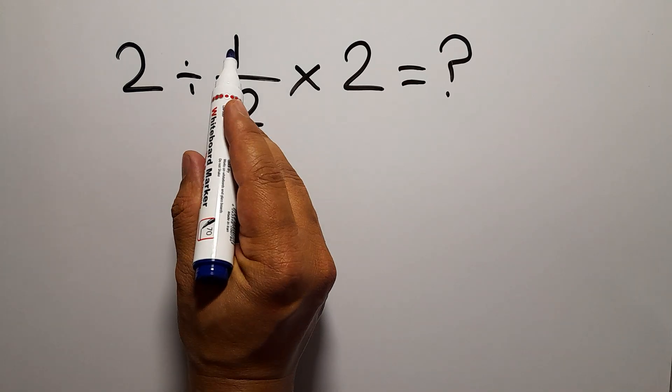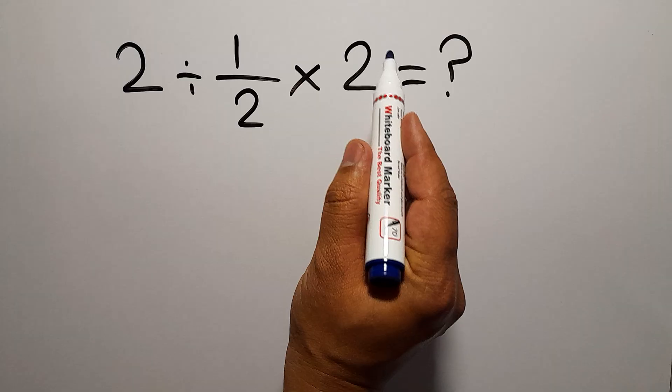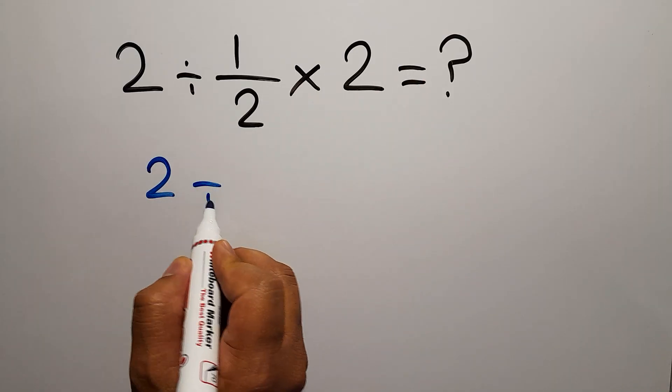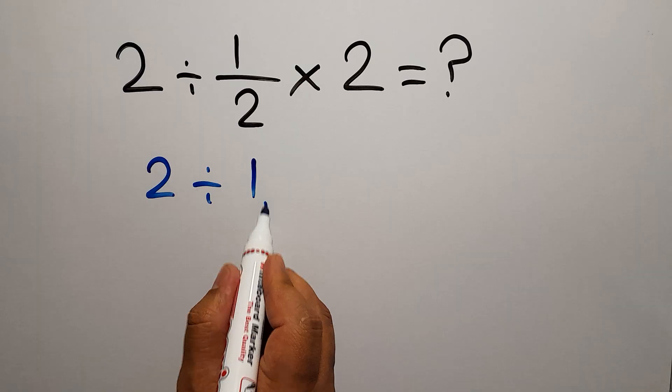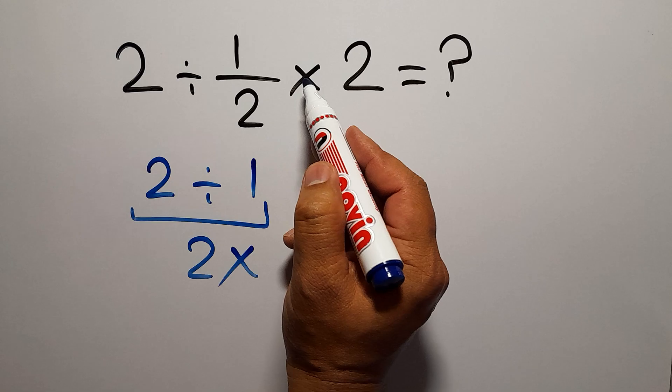2 divided by 1/2 times 2. We can easily cancel these twos and get 2 divided by 1, which equals 2. But this answer is not correct because multiplication and division have equal priority.